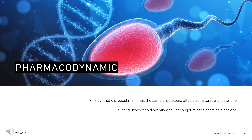Pharmacodynamics: Megastrol is a synthetic progestin and has the same physiologic effects as natural progesterone. These effects include induction of secretory changes in the endometrium, increase in basal body temperature, pituitary inhibition, and production of withdrawal bleeding in the presence of estrogen. Megastrol has slight glucocorticoid activity and very slight mineralocorticoid activity. This drug has no estrogenic, androgenic, or anabolic activity.